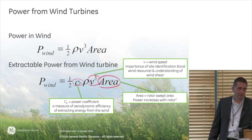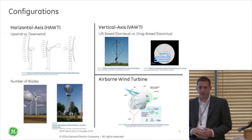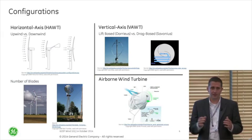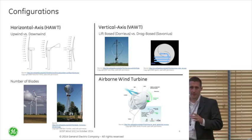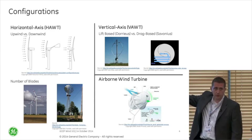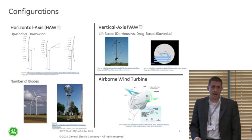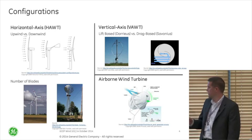If you looked across different wind turbine configurations on Google, you'll see quite a few different types. I've broken them down into three main categories. There's horizontal axis, which are typically what you've normally seen. There's vertical axis on the top right — less common, but you do see them. And then there's airborne wind turbines — the idea of getting rid of a tower, putting these things on a kite, and getting them up high in the air to extract higher wind speeds.